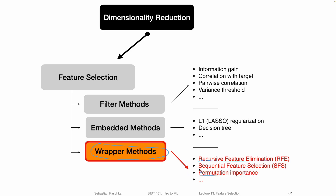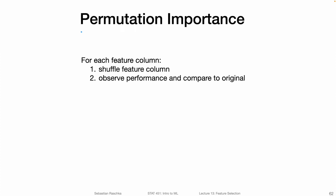In the upcoming videos, we will also talk about another method called sequential feature selection. Before giving the nitty-gritty details of how permutation importance works, I thought it might make sense to give you a two-step outline to show you how beautifully simple this method is.